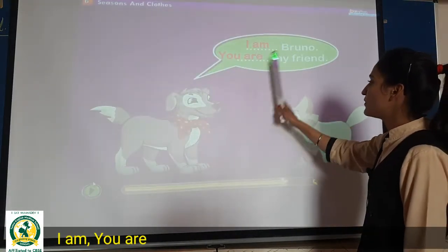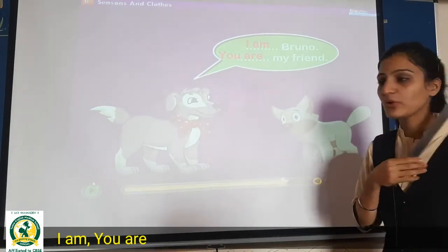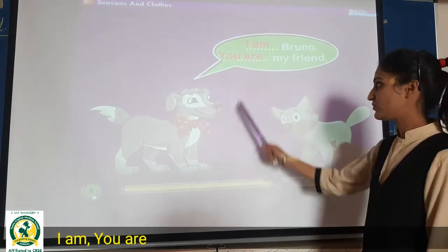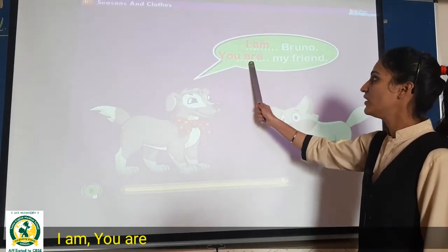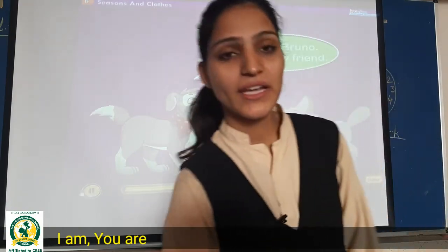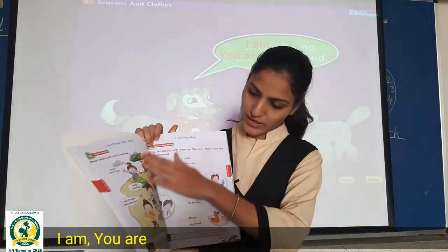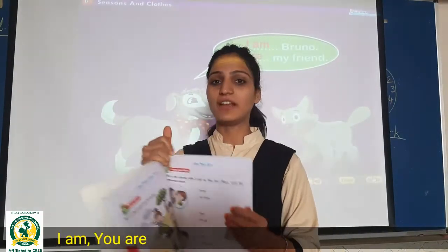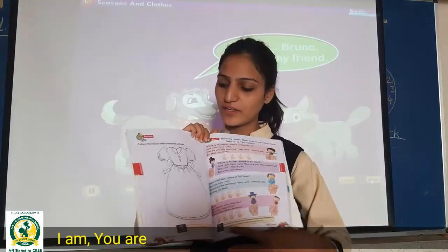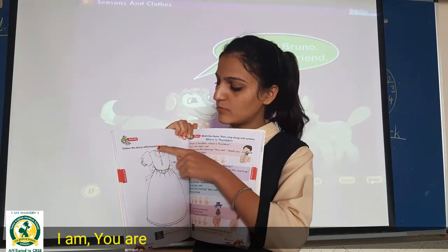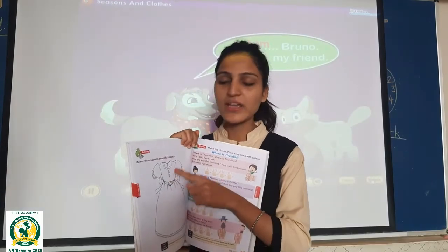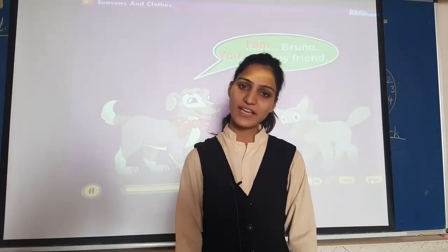I am Bruno. This is Bruno. So write: I am Bruno, and then you are my friend. So: I am Bruno, you are my friend. Students, this is page number 90. I am and you are — practice I am and you are.